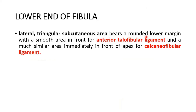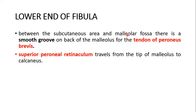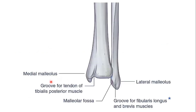The lateral triangular subcutaneous area bears a rounded lower margin with a smooth area in front for the anterior talofibular ligament, and a similar area in front of the apex for the calcaneofibular ligament. You can see this is the calcaneofibular ligament and this is the anterior talofibular ligament. Between the subcutaneous area and the malleolar fossa, there is a smooth groove on the back of the malleolus for the tendons of peroneus brevis and peroneus longus — also called fibularis longus and brevis. Both tendons lie here. The superior peroneal retinaculum travels from the tip of the malleolus to the calcaneus.